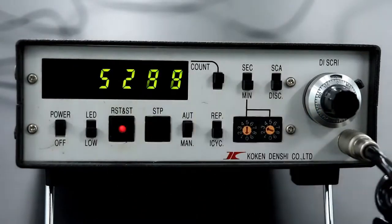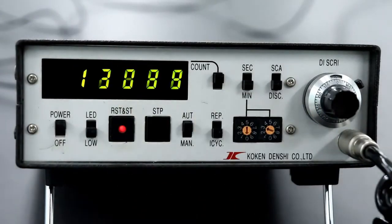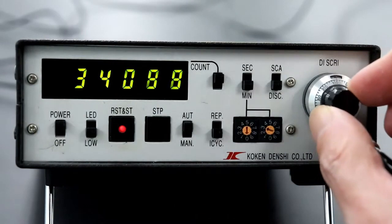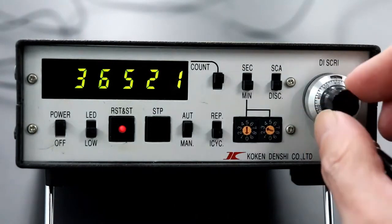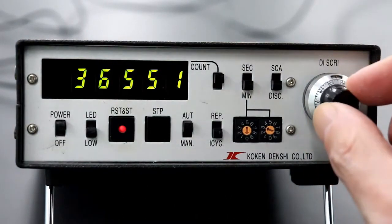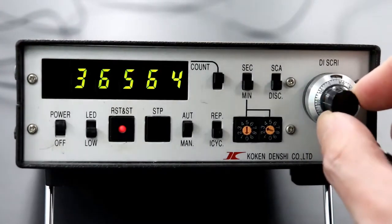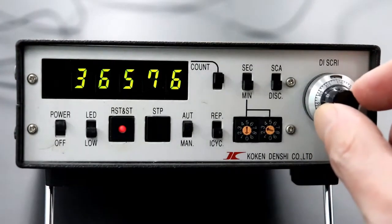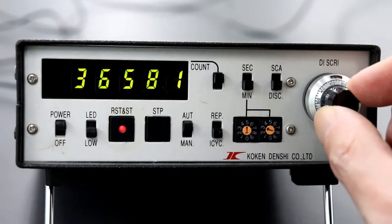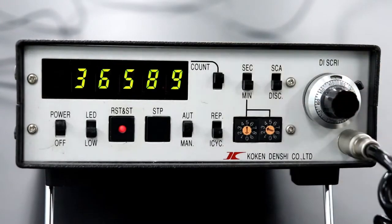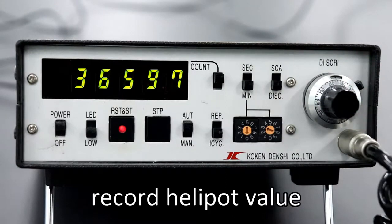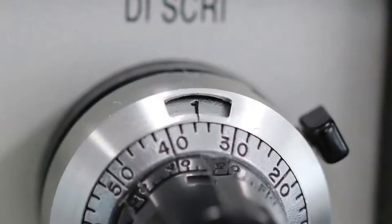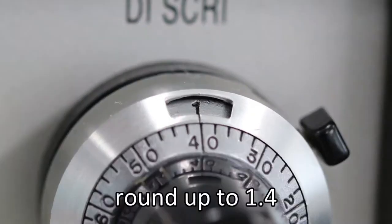At beginning, the value will rise vigorously. As you turn the helipot, the numbers on the display board will gradually change more slowly. When the number of counts per second reaches a few times, stop turning the helipot and record the helipot value at that time. In this case, it is about 1.35. To make it a round number, round it up to the first decimal place and set it to 1.4.